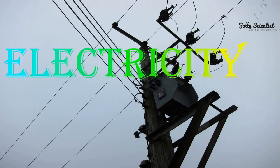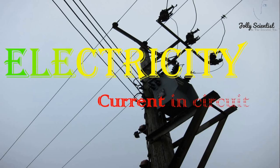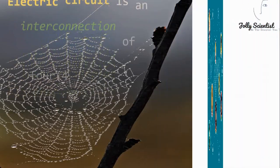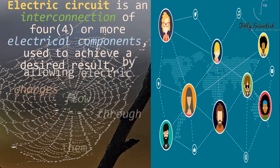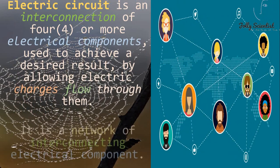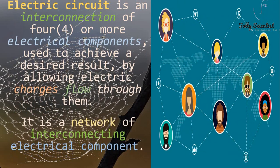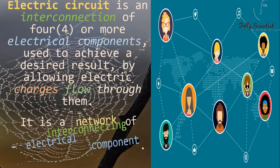Electricity. Current in circuit. An electrical circuit is the connection of four or more electrical components used to achieve a desired result by allowing electric charge flow through them. It is a network of interconnecting electrical components.